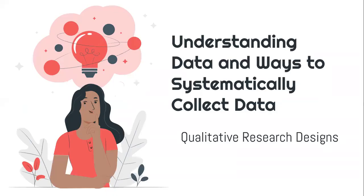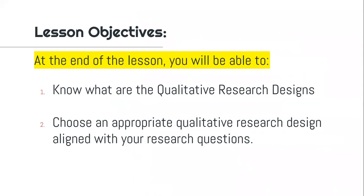Our lesson objectives are the following. We only have two. First, know what the qualitative research designs are. Second, choose an appropriate qualitative research design aligned with your research question. When we say research questions here, I'm going to reiterate that I'm referring to the statement of the problem. You will choose that — maybe sometime next week.